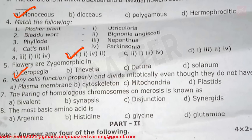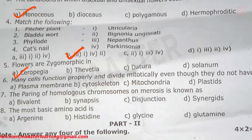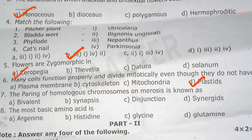Sixth question: many cells function properly and divide mitotically even though they do not have — let's see the answer — Option B. Seventh question: the pairing of homologous chromosomes during meiosis is known as — Option B. Next, the most basic amino acid is — Option B.